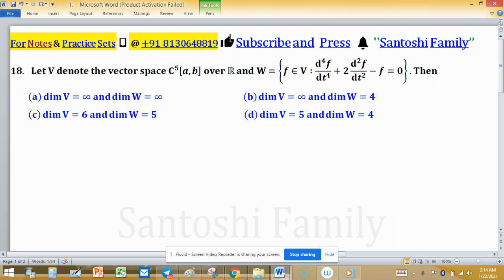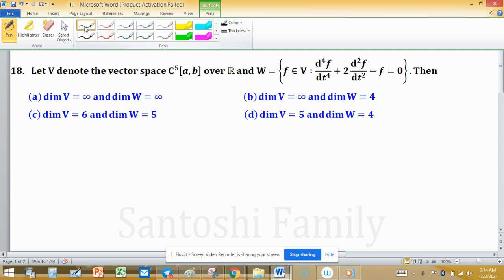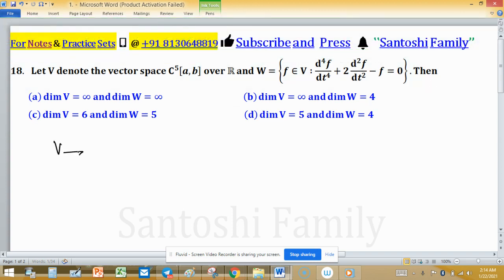What is the value of dimension V and W? V is a vector space C^5 on closed interval [a,b] over R.